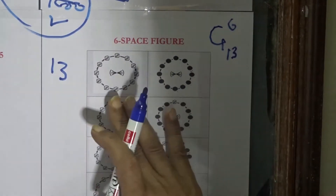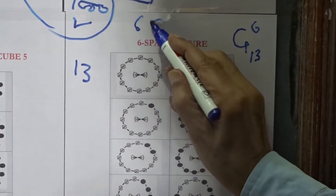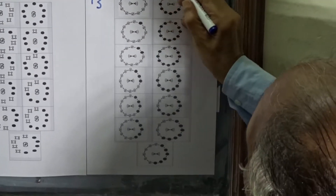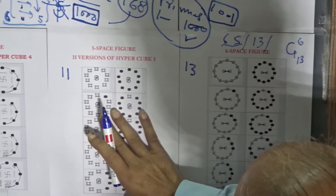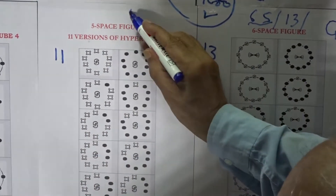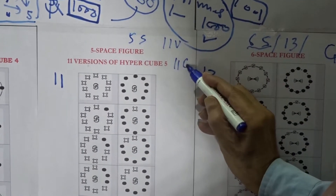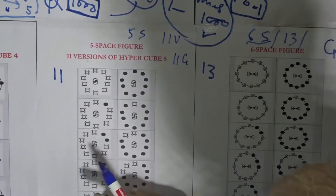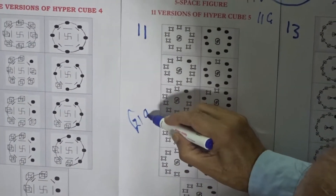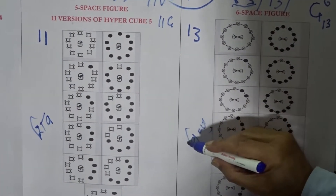So 5-space is the 11-geometries range — the 11 versions of Hypercube 5 are the representative regular bodies of 5-space. And 13 geometries of the 6-space, the self-referral domain, are the representative regular bodies of 6-space. So 6-space geometries are 13 in number; there are 13 versions of 6-space. The 5-space is presided by Lord Shiv and 6-space is presided by Lord Vishnu.